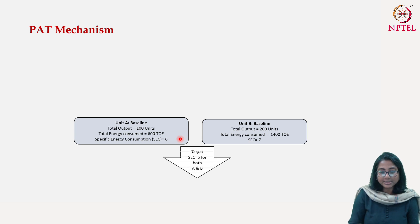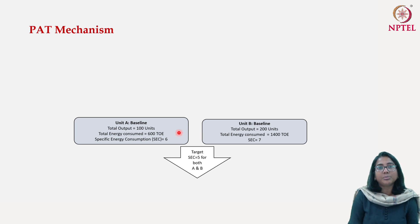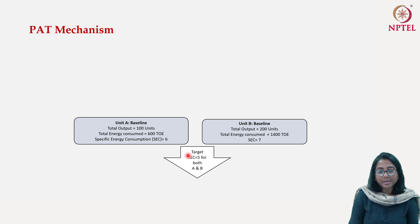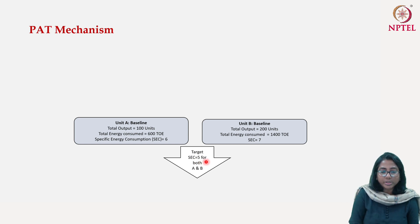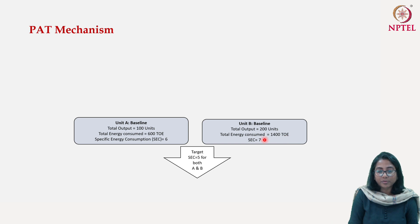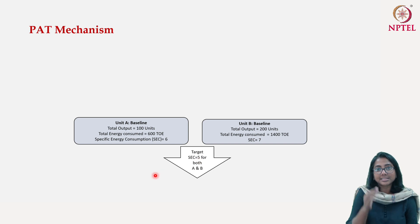For example, after surveying both units, the Bureau of Energy Efficiency identified that both could improve their energy efficiency so that the specific energy consumption should become 5. For Unit A, it has to reduce SEC from 6 to 5, and for Unit B it has to reduce from 7 to 5. These are the targets set by BEE for these two units.